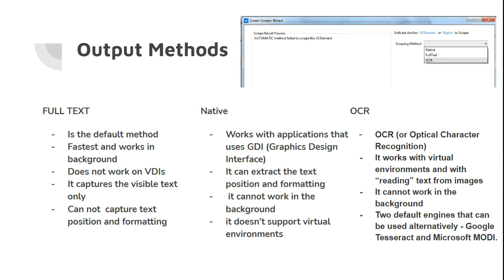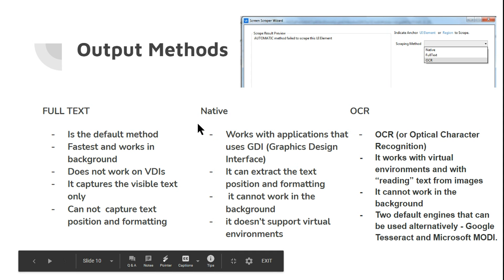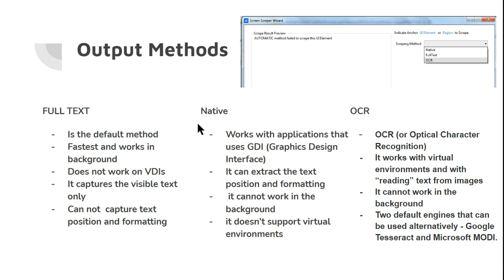Let's understand each of these in detail. I hope you have seen how to use the Screen Scrape Wizard. I'm going to show you practically, but it's very important to understand a couple of terms and concepts first. These are the three different technologies used behind the scenes to extract data from the UI interface: Full Text, Native, and OCR.